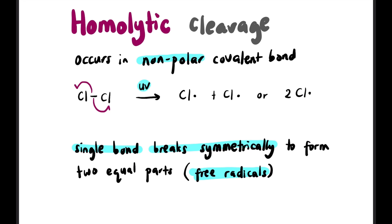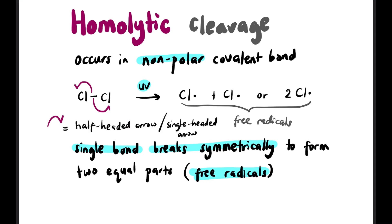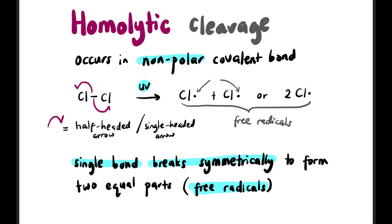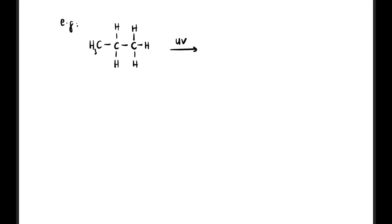The Cl• is a free radical, and the arrow used is a half-headed arrow, also called a single-headed arrow. The dot shown represents an unpaired electron from the bonded electrons that broke. Let's look at another example: C–C bond breaks under UV to produce two fragments, each with one dot.